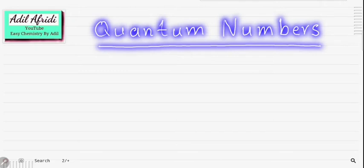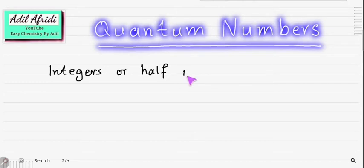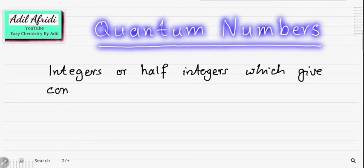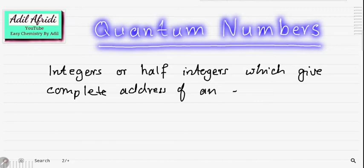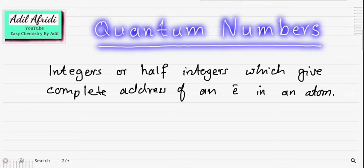Today's lecture is about quantum numbers. We define quantum numbers as integers and half-integers which give the complete address of an electron in an atom — which shell it is in, which sub-shell, and which orbital.